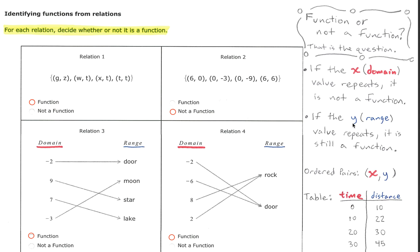Second, if the y value repeats it's okay, that is still a function, and the y value represents the range. Remember that ordered pairs are given as x, y pairs.